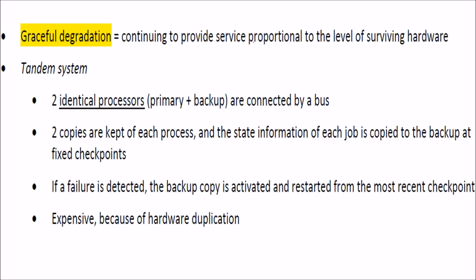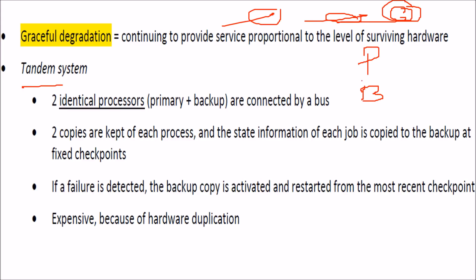Graceful degradation means the system keeps working even as components fail — for example, if you have three processors and one goes down, two still operate. A tandem system has a primary and a backup — two identical processors connected by a bus, with two copies of every process. State information from each job is copied to the backup at fixed checkpoints. If failure occurs, the backup is activated and restarts from the most recent checkpoint. This is expensive but always works.